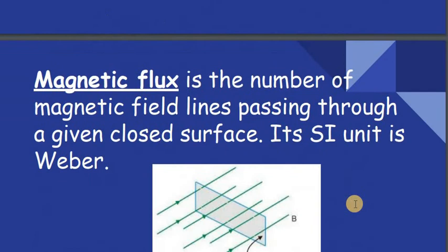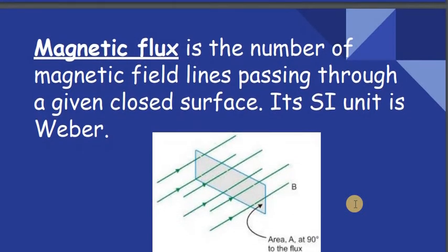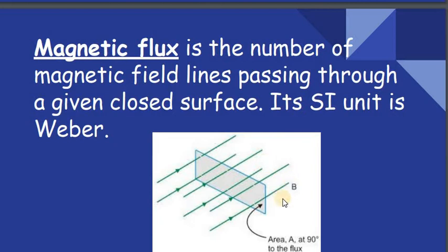Magnetic flux is the number of magnetic field lines passing through a given closed surface. The number of field lines passing through this closed surface is called magnetic flux, and its SI unit is Weber.